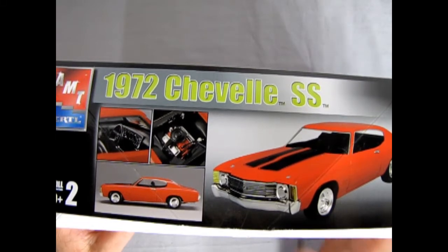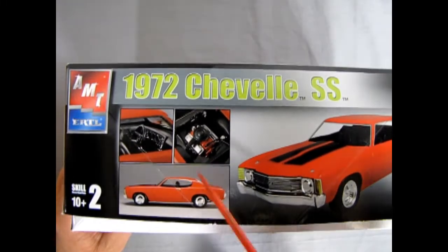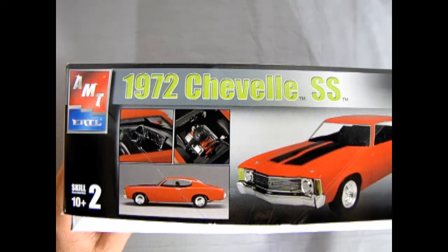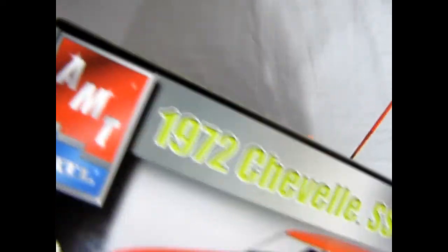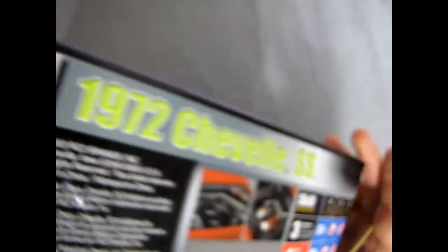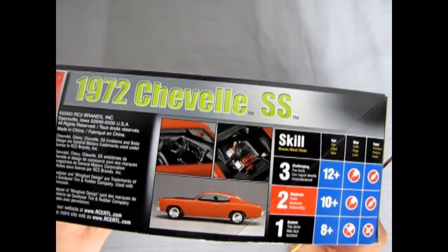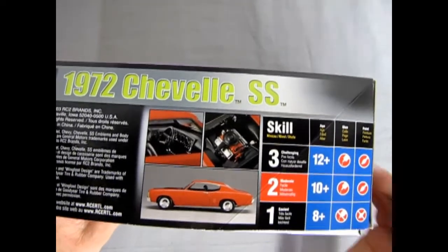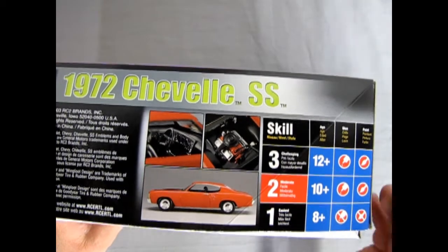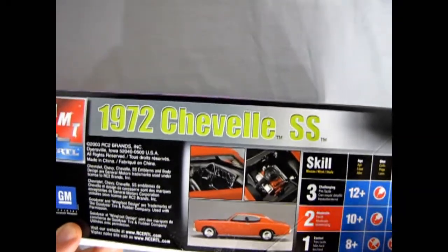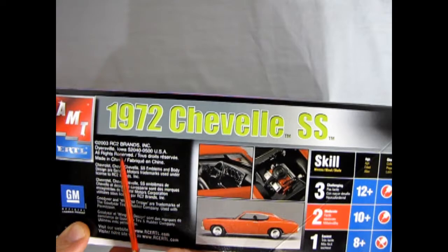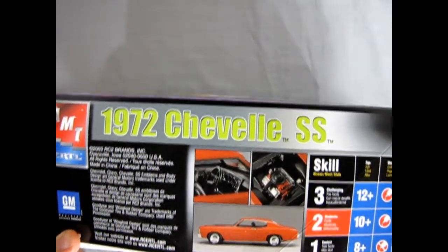As you can see, there's a few pictures of the interior engine and side profile of the car, as well as the 3 quarters that we saw in the front of the box. The side of the box mirrors that. This is a skill level 2 kit for ages 10 and up. Requires glue and a paint brush. And it came out in 2003 from RC2 Brands. So that's quite a while ago.